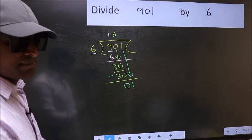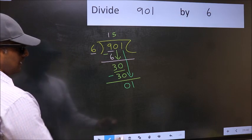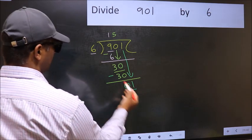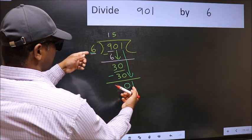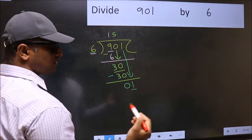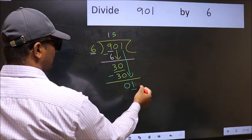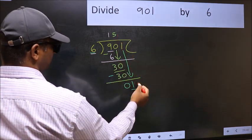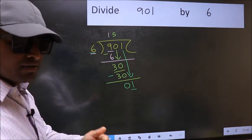So 1 down. After this step, the mistake happens. And the mistake is this. Here we have 1 and here 6. 1 is smaller than 6. So what many do is, they directly put dot and take 0. Which is wrong. Why is it wrong?